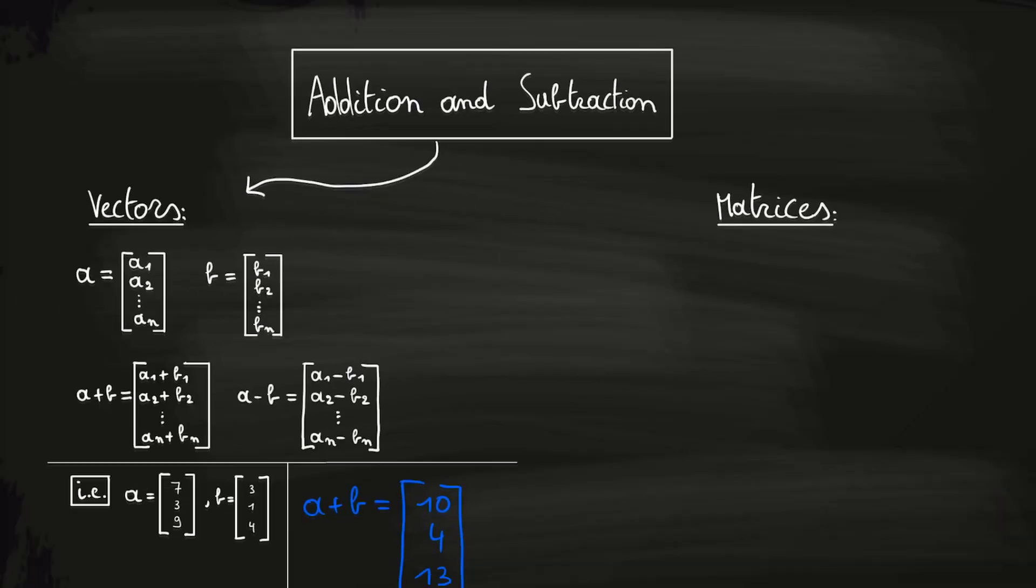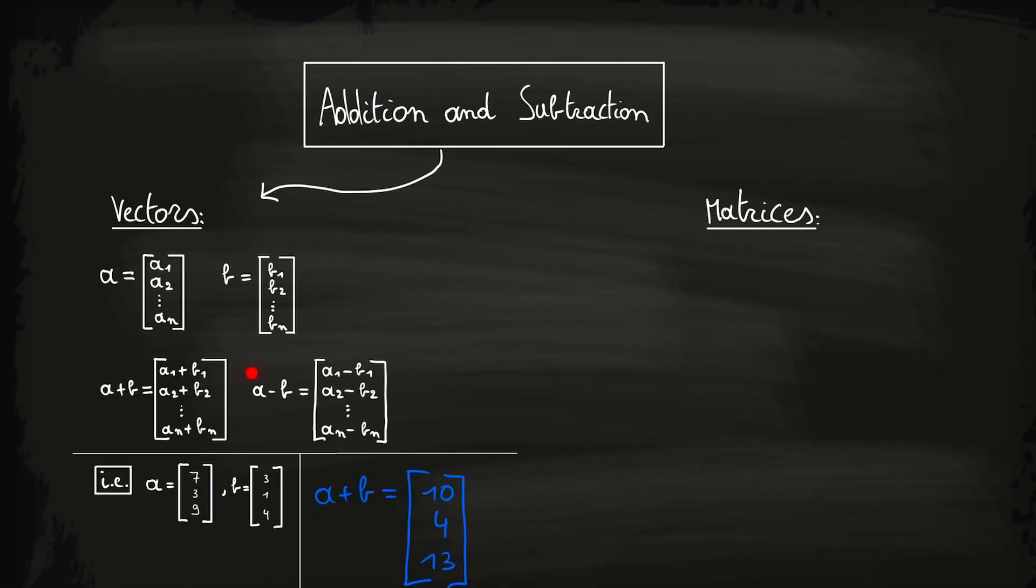And the difference of vectors a and b, denoted as a minus b, is calculated by subtracting the corresponding components. Note that in order to add or subtract two vectors, they must have the same dimension, meaning they must have the same number of components.